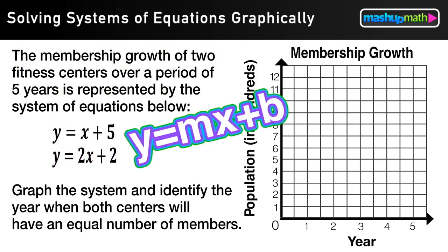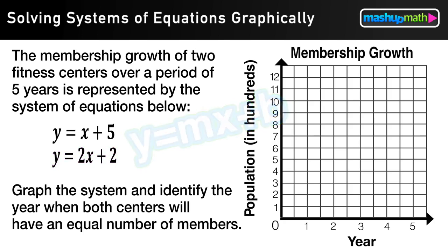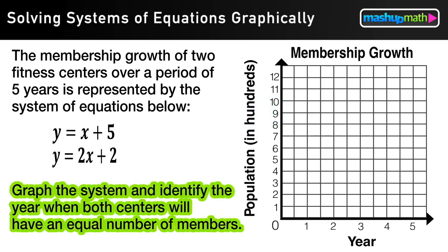Both of which are in y equals mx plus b form, or slope-intercept form. What we want to do is graph the system and identify the year when both centers will have an equal number of members.